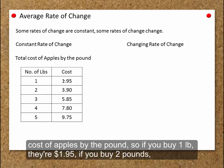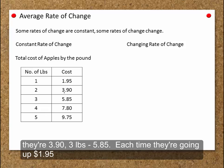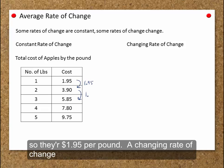So if you buy one pound, they are $1.95. If you buy two pounds, they are $3.90. Three pounds, $5.85. Each time, they are going up $1.95, so they are $1.95 per pound.